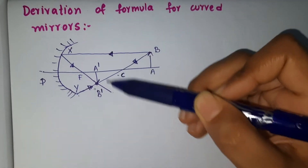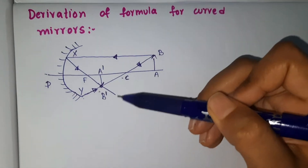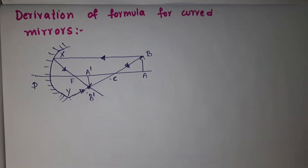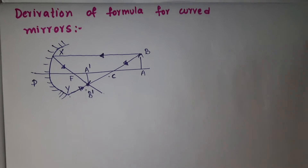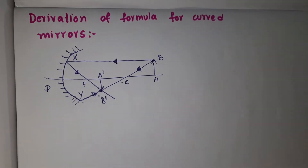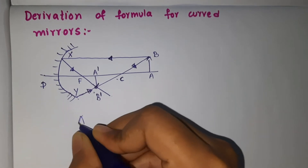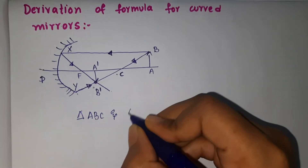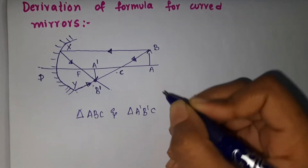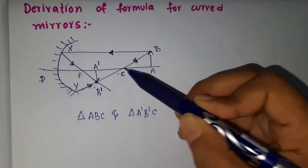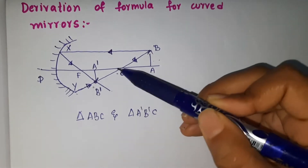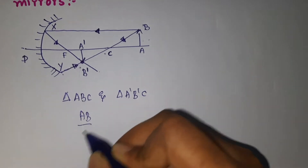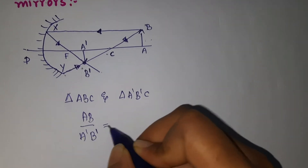It's a real inverted image — B'A'. Now let's derive the formula. We have two similar triangles: triangle ABC and triangle A'B'C. These are similar triangles, so we write the condition: AB / A'B' = AC / A'C.